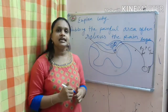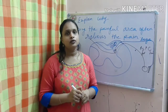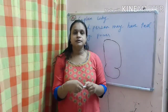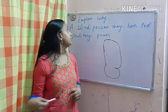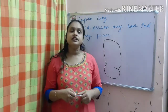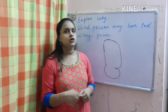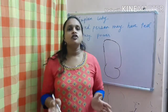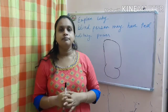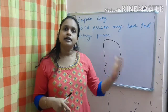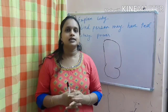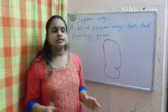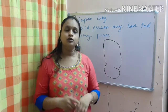So behind this is the gate control theory. Next question is: explain why a blind person may have increased auditory power. It is because of cortical plasticity. But before discussing cortical plasticity, we will first look at the sensory homunculus in the brain.